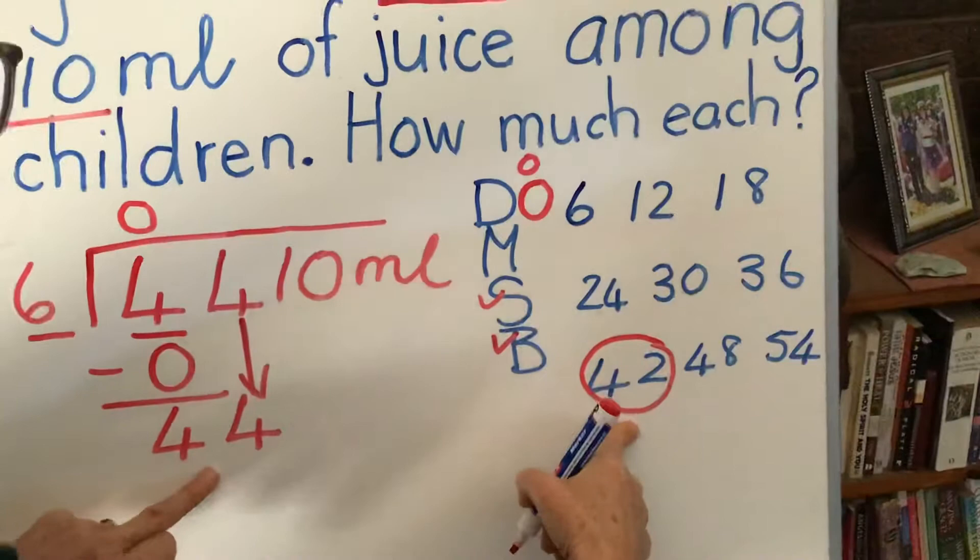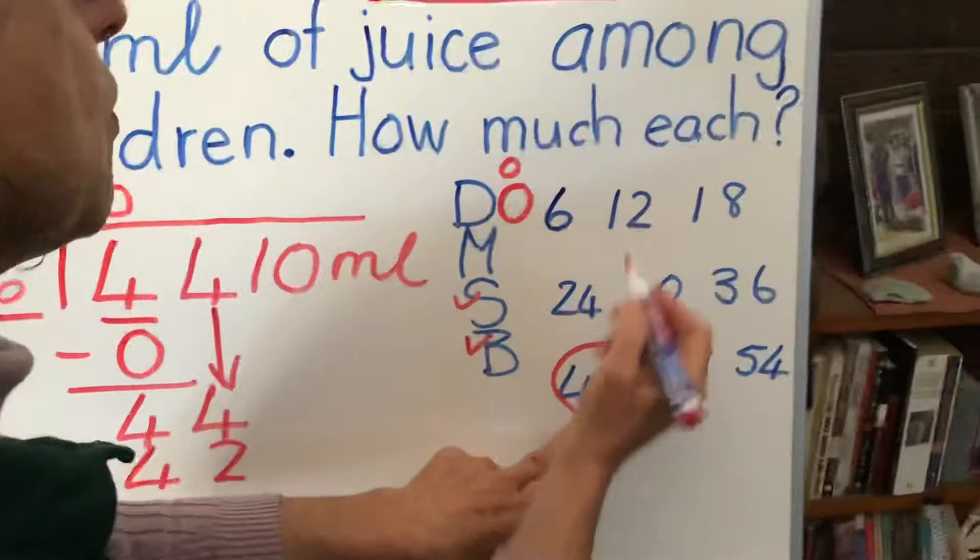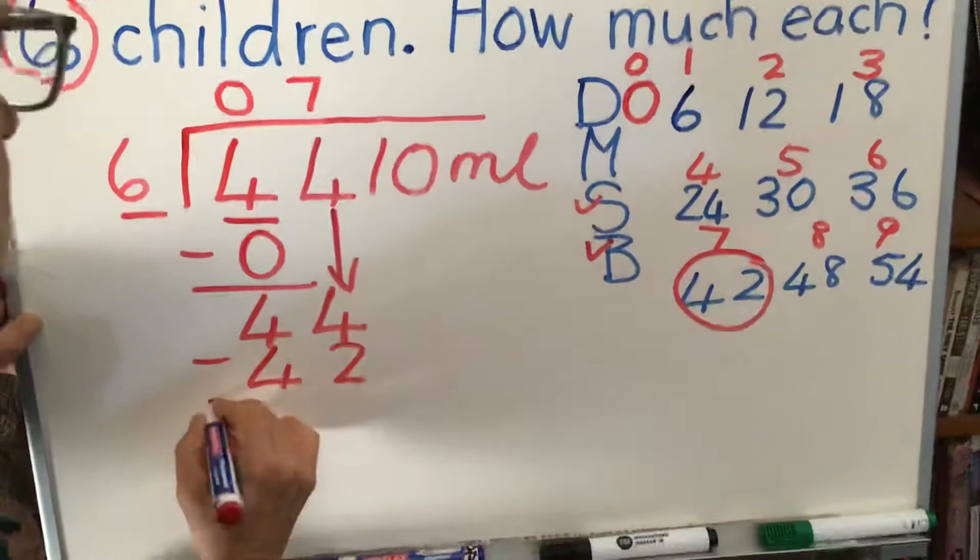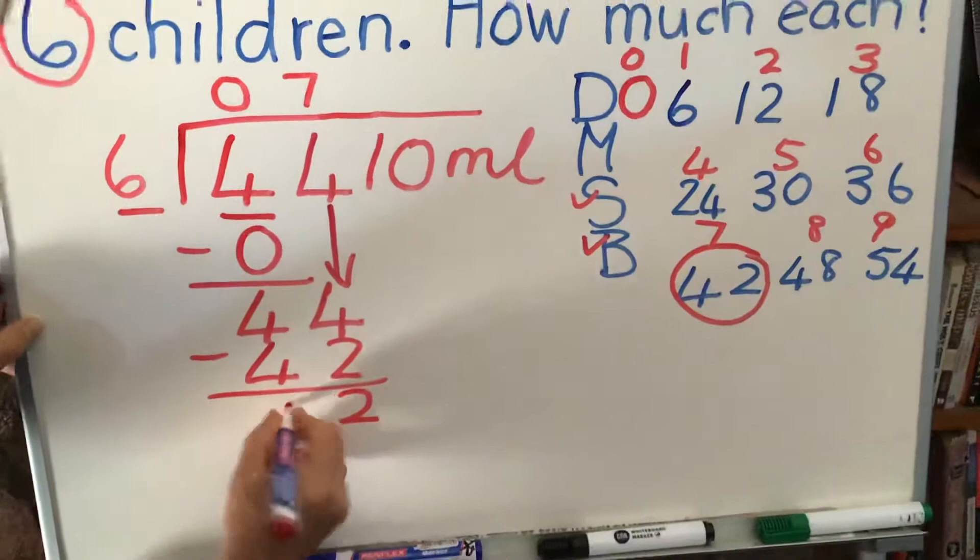Remember which number this is. We have to put the numbers of our multiples in place. So that was 7. 7 times 6 is 42. We minus then, and 4 minus 2 is 2, 4 minus 4 is 0.